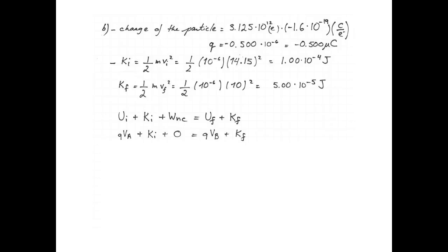Only the electric forces act on the particle. That means that there's no work done by non-conservative forces, such as friction or anything else. The final potential energy is the charge multiplied by the potential at point B.